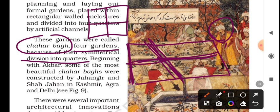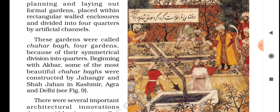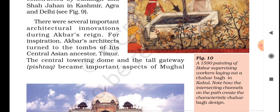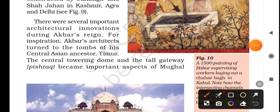Akbar, Babar, Jahangir, and Shah Jahan all practiced this in the architecture they made. In any kind of construction, these gardens are present. During Akbar's reign, there were many architectural innovations in construction and engineering.